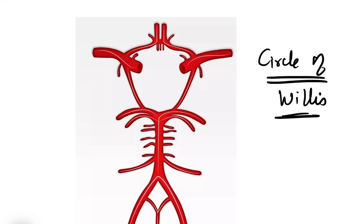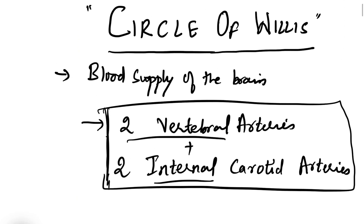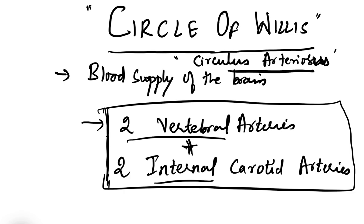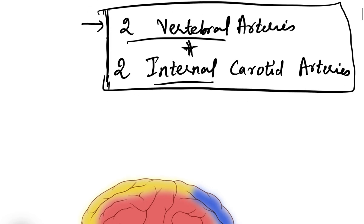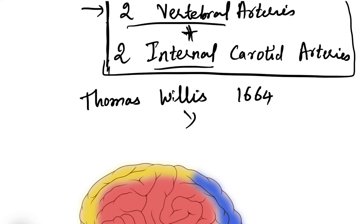The branches of these two vertebral arteries and two internal carotid arteries form one circle — a polygonal circle at the base of the brain. This polygonal circle at the base of the brain is known as the Circle of Willis. It is also known as Circulus arteriosus, and this term was coined after the British physician Sir Thomas Willis in the year 1664.